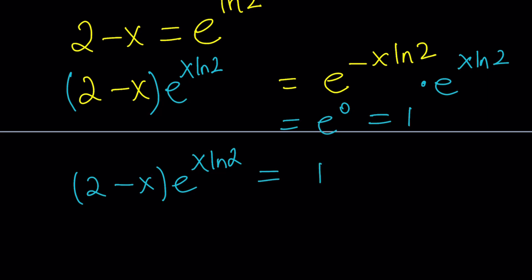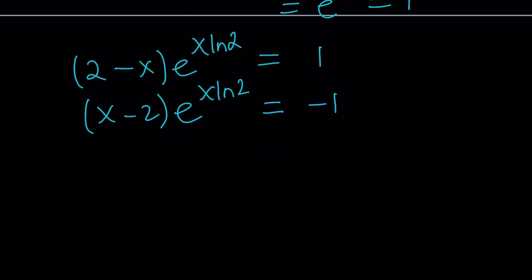Now, there is an x in the exponent and a negative x at the base or the coefficient. They both have to be the same kind. So we're going to multiply both sides by negative 1. A minus B is going to turn into B minus A. A minus B and B minus A are opposites because their sum is 0.